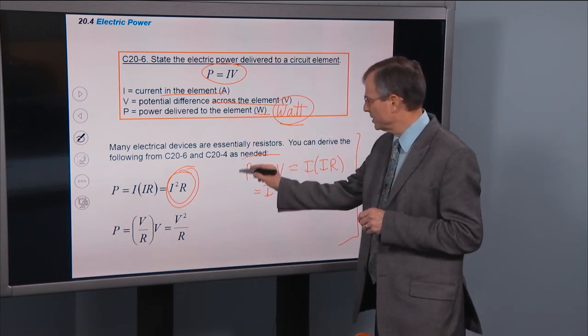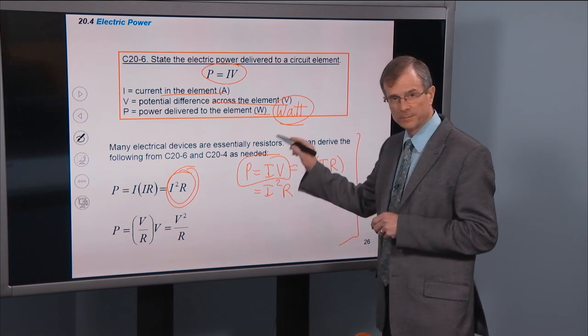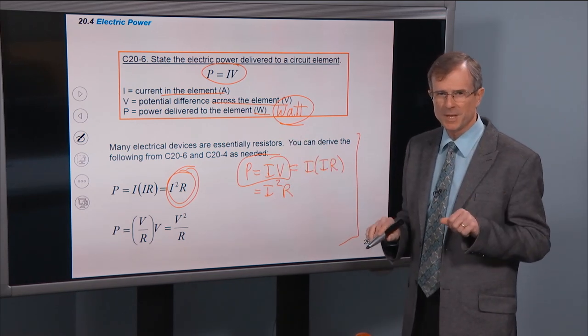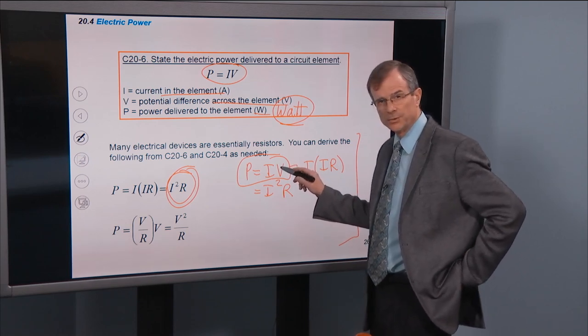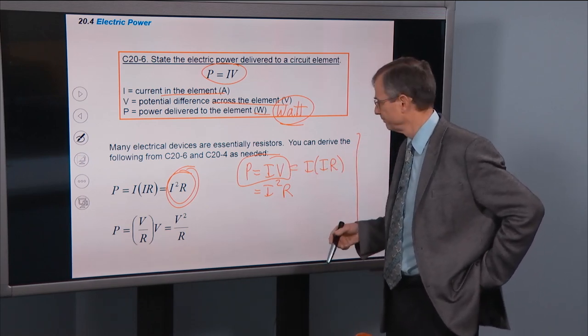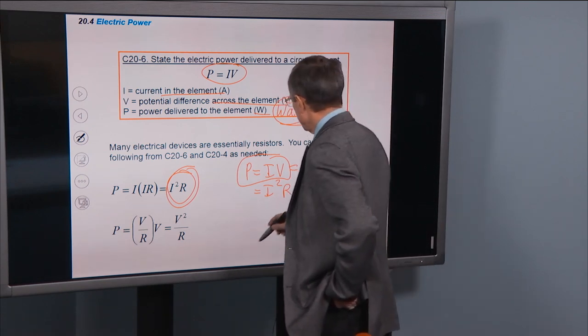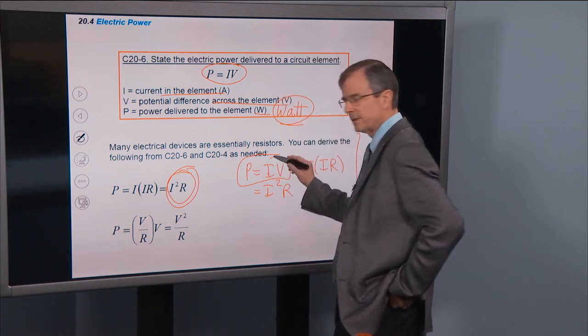So basically what we've done is use this general form, this form always works, P equals IV always works. And we replace this voltage with I times R. We can also replace the current in P equals IV.